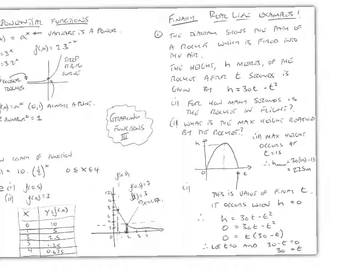And finally, we look at a real-life example. So the diagram shows the path of a rocket which is fired into the air. The height, h meters, of the rocket after t seconds is given by this quadratic: h equals 30t minus t squared. So for how many seconds is the rocket in flight, and what is the maximum height reached by the rocket?